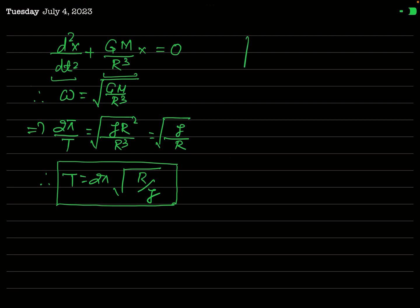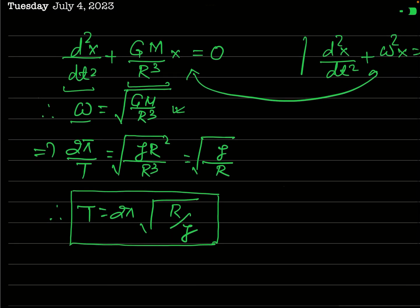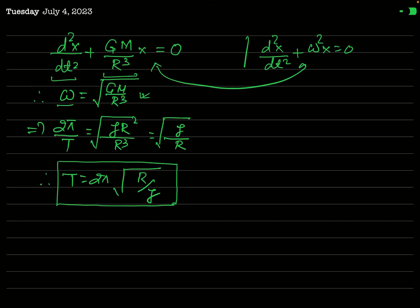Comparing this with the standard SHM equation d²x/dt² + ω²x = 0, we see that the angular frequency ω = √(GM/R³). Since the time period T = 2π/ω, we have 2π/T = √(GM/R³).